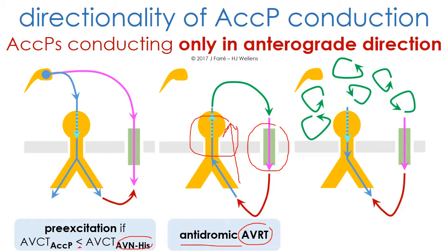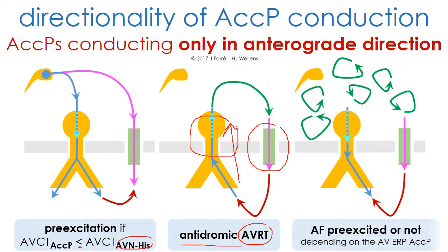Finally, these patients may develop atrial fibrillation, and if the anterograde effective refractory period of the accessory pathway is short, they may present very fast life-threatening ventricular rates during atrial fibrillation.